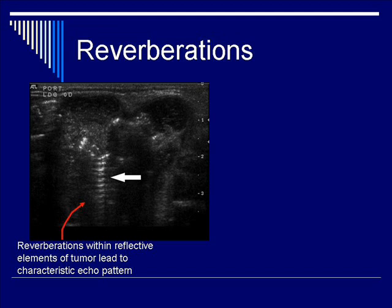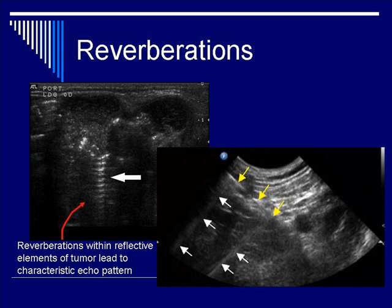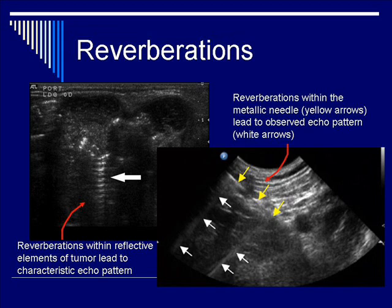This is as clear a picture as we can show of this artifact in a clinical setting. A more common setting in which you will see this is during an invasive procedure, such as a biopsy needle or central venous catheter needle insertion, which also demonstrates the reverberation artifact. The yellow set of arrows points out the needle, while the two sets of white arrows point out the reverberation artifacts emanating distally from the metallic object.